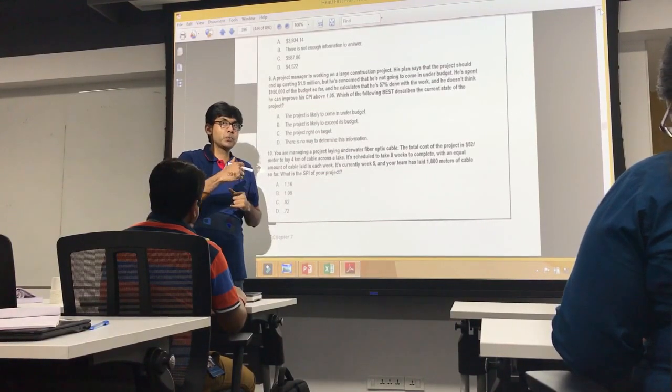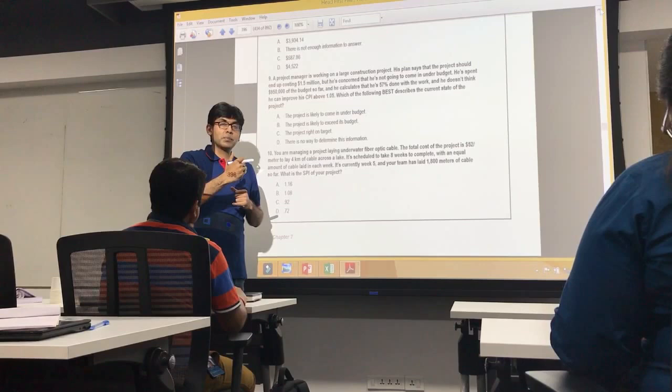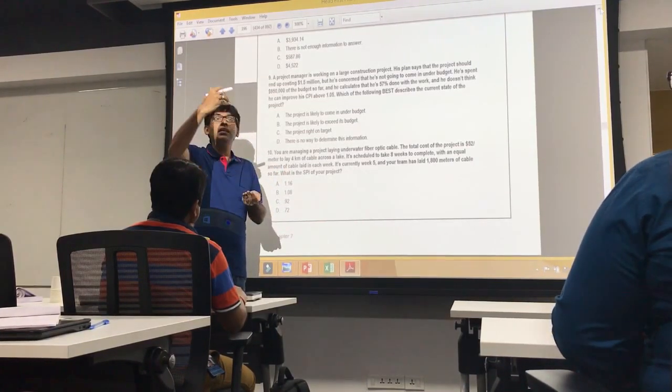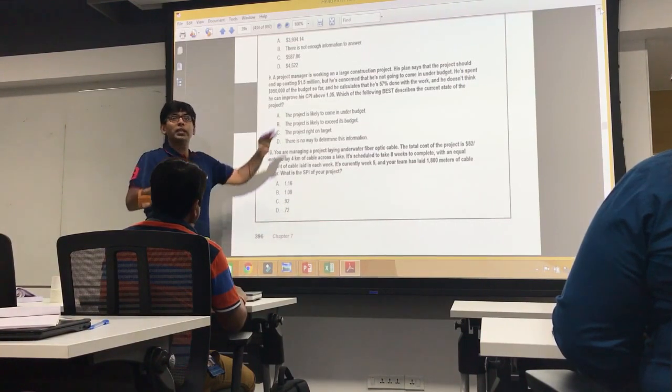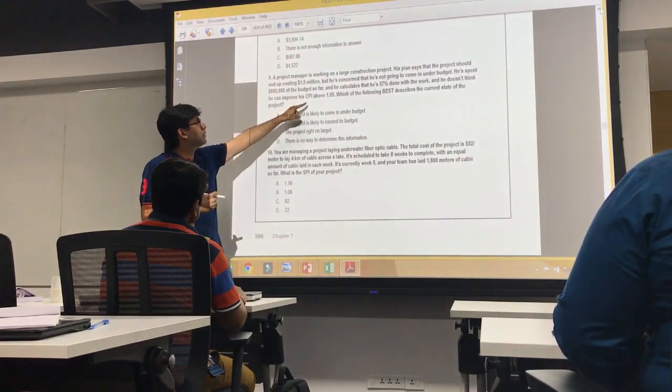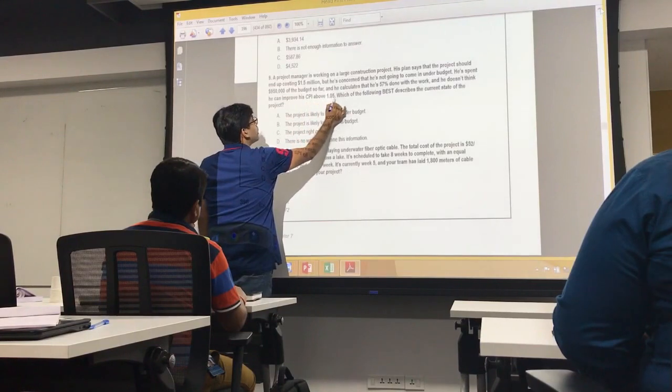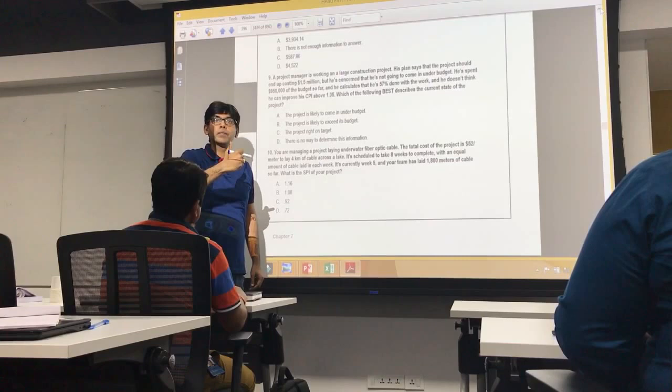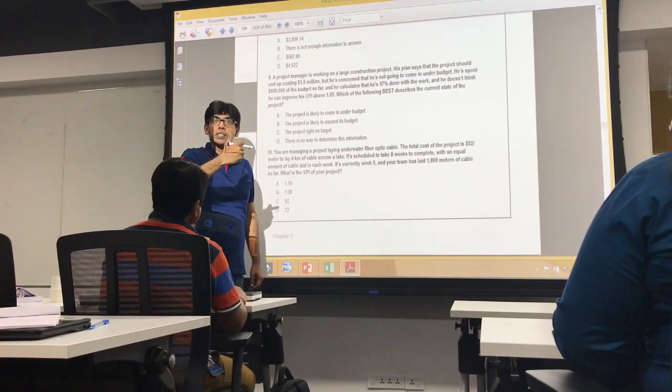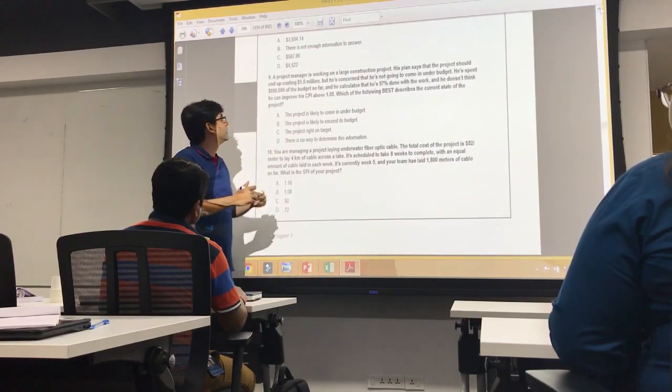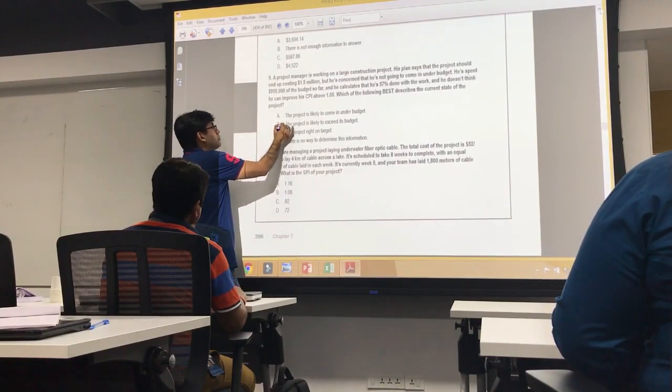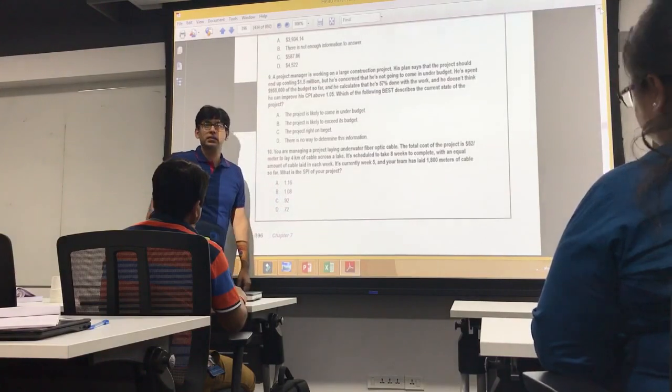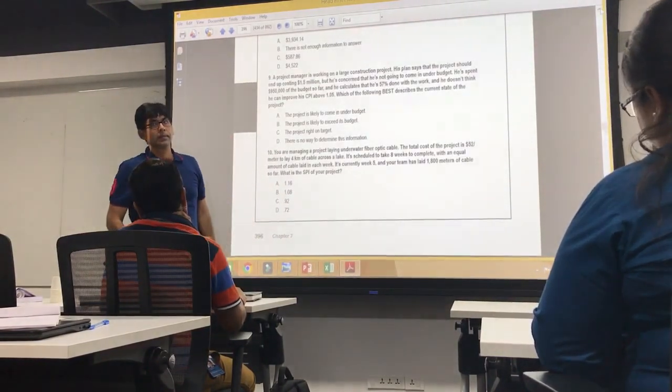If TCPI is 1.16, what does it mean? He has to exceed 1.16 to hit this target. Which means, the maximum improvement possible is 1.05. But in order to hit the target of 1.5 million, he has to improve it to 1.16. At least, he will exceed the budget. Yes. The answer is B. The project is likely to exceed its budget. Does it make sense or not? Yeah.